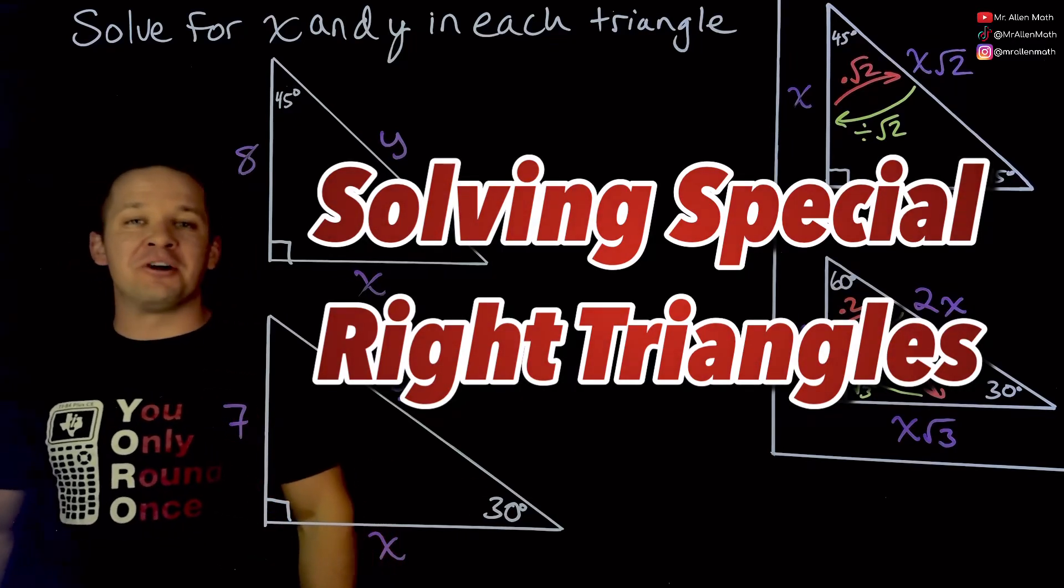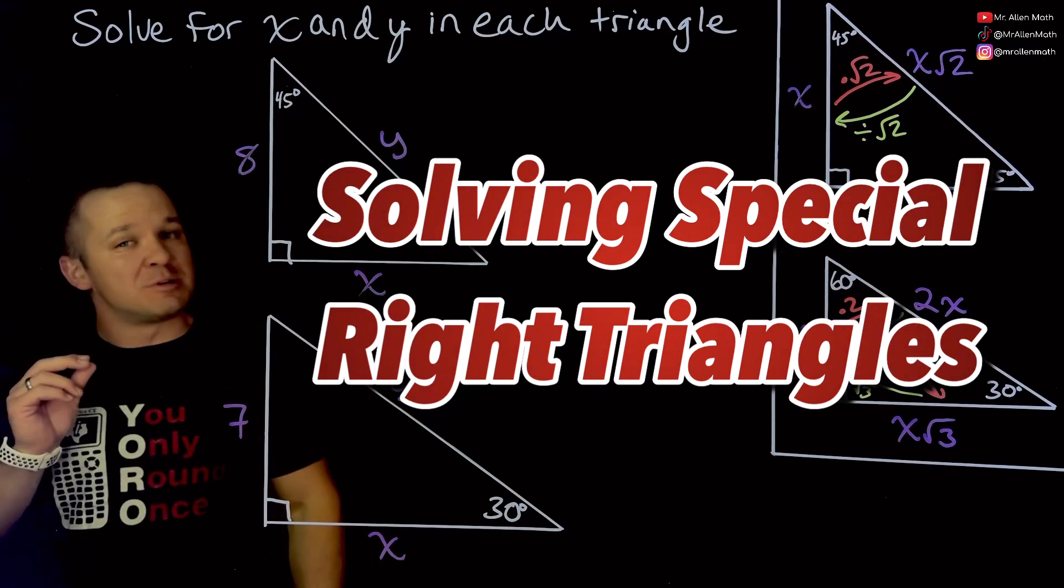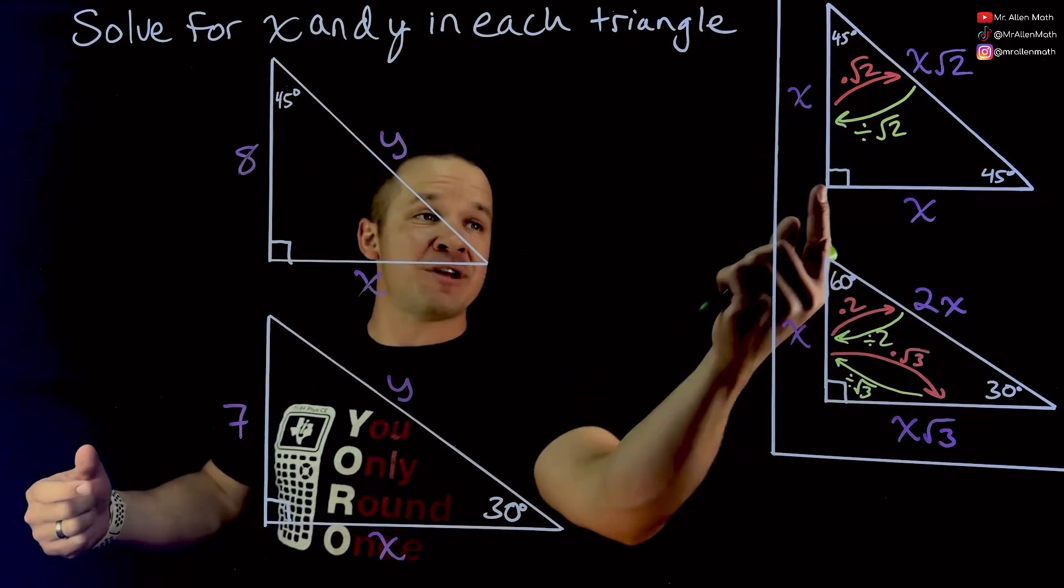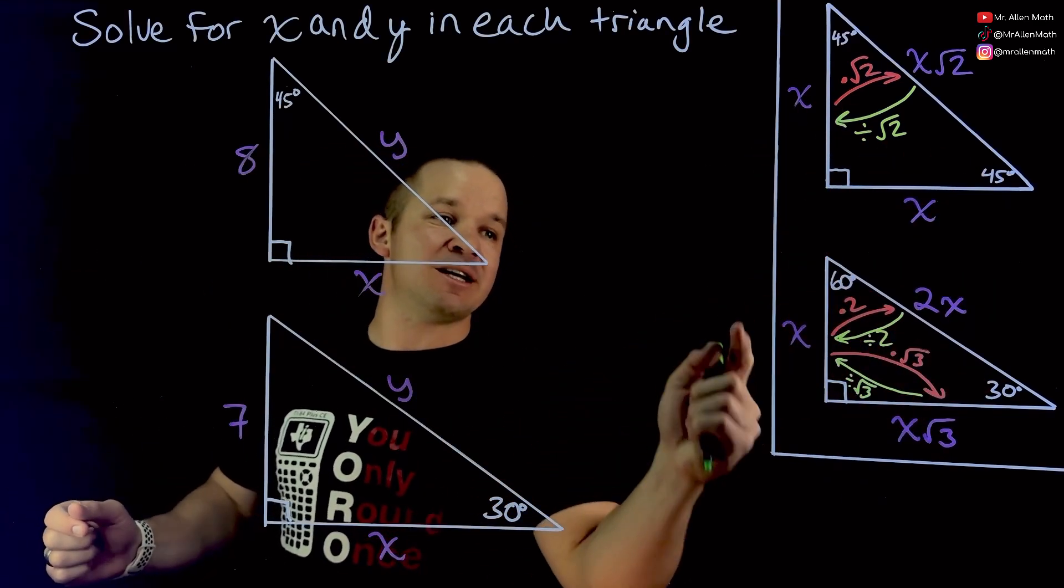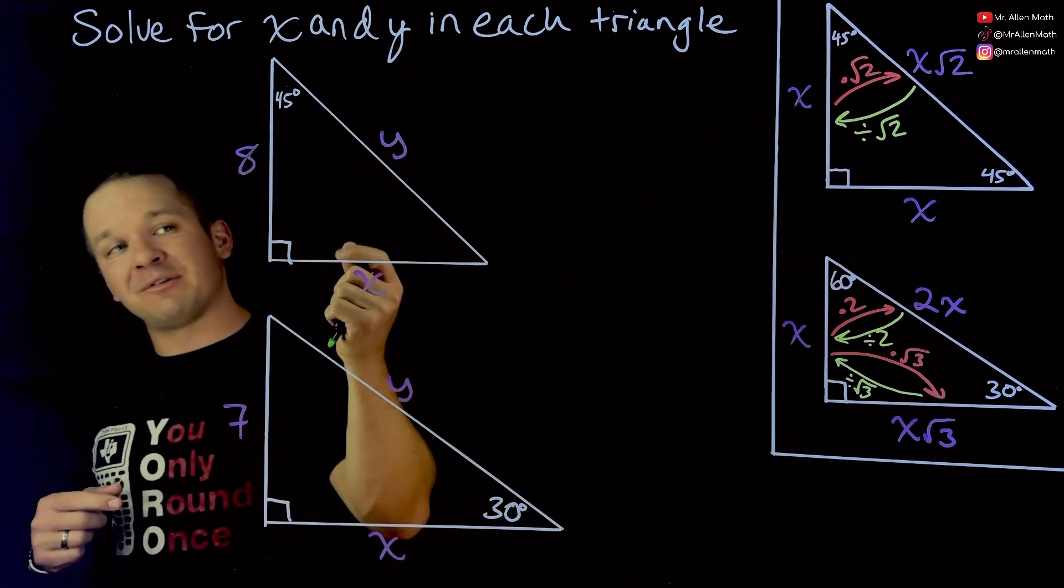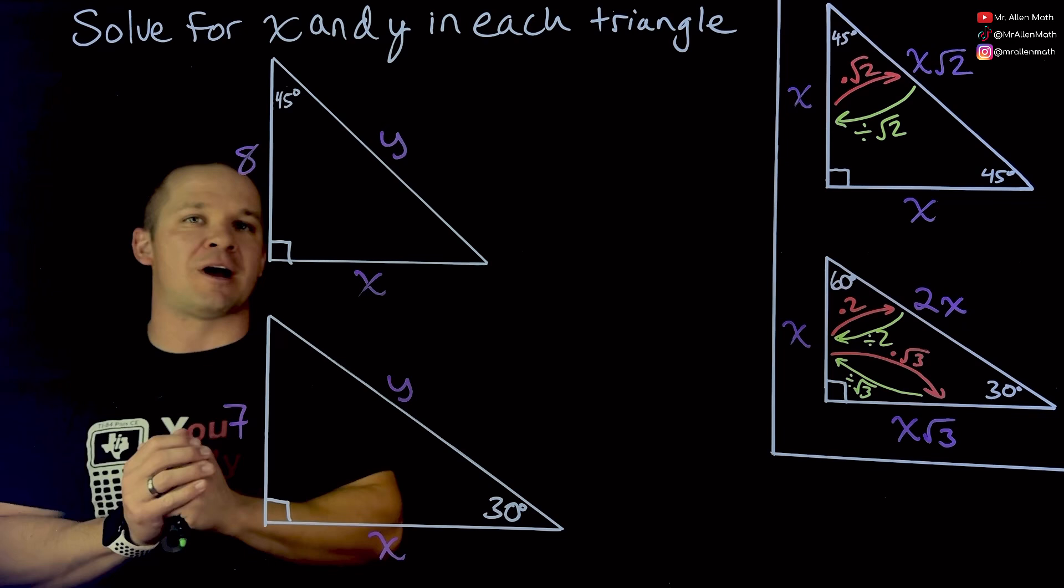What's poppin' dogs, Mr. Allen here solving for some missing sides in some special right triangles. So our special right triangles are the 45-45-90 triangle and 30-60-90 triangle. We've got these over here for a reference, so we'll look over at those as we solve for the missing sides in these two triangles.